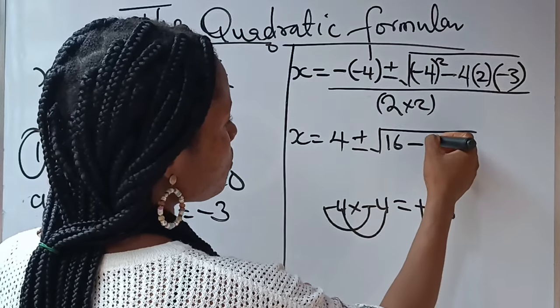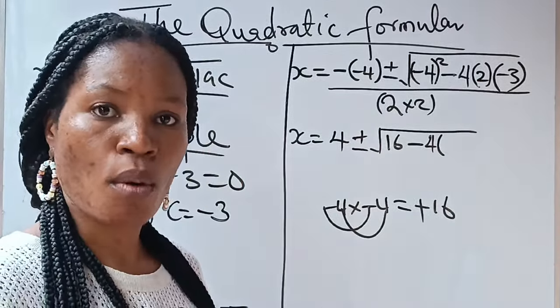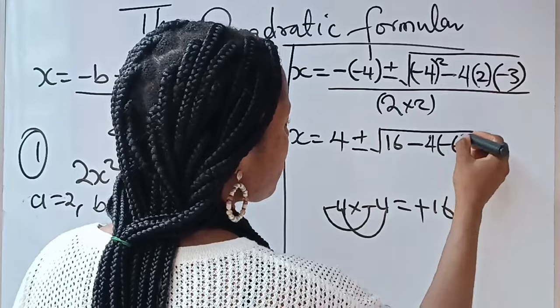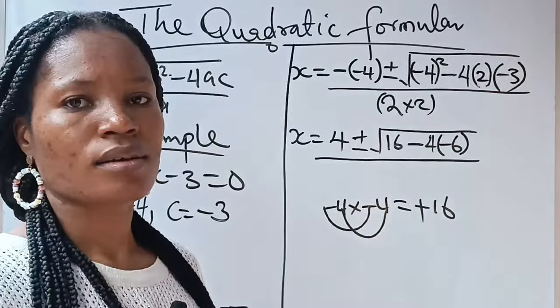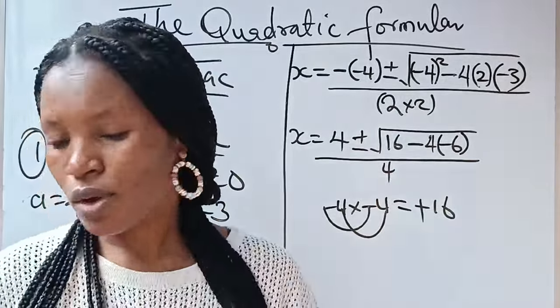Minus, you have 4 into 2 times -3 will give you -6. So, you have your -6 here. Everything divided by 2 × 2 is going to give you 4. So, let's continue.